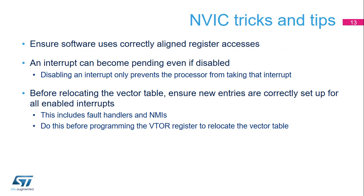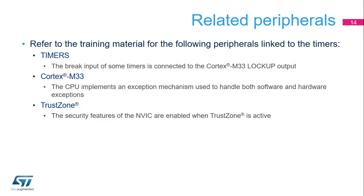When accessing the NVIC registers, ensure that your code uses a correctly aligned register access. Unaligned access is not supported for NVIC registers as well as all memory-mapped registers located in the Cortex-M33. An interrupt becomes pending when the source asks for service. Disabling the interrupt only prevents the processor from taking that interrupt — make sure the related interrupt flag is cleared before enabling the interrupt vector. Before relocating the vector table using the VTOR register, ensure that fault handlers, NMI, and all enabled interrupts are correctly set up at the new location. The NVIC is linked with the timers, Cortex-M33 CPU, and TrustZone modules.